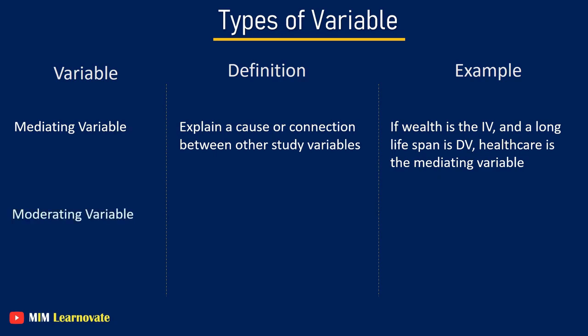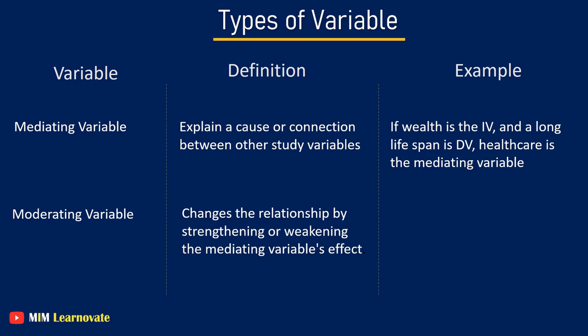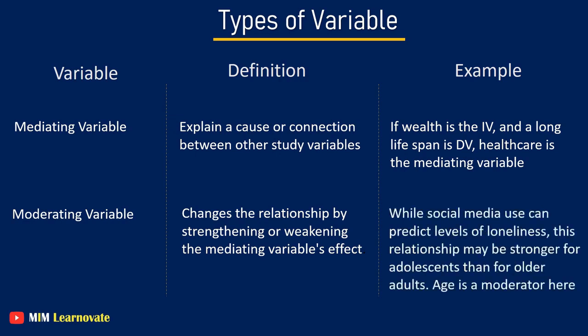Moderating variable. A moderating variable changes the relationship between dependent and independent variables by strengthening or weakening the mediating variable's effect. For example, while social media use can predict level of loneliness, this relationship may be stronger for adults than for older adults. Age is a moderator here.